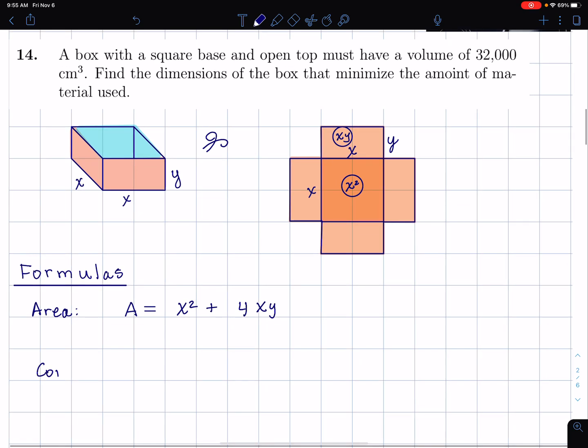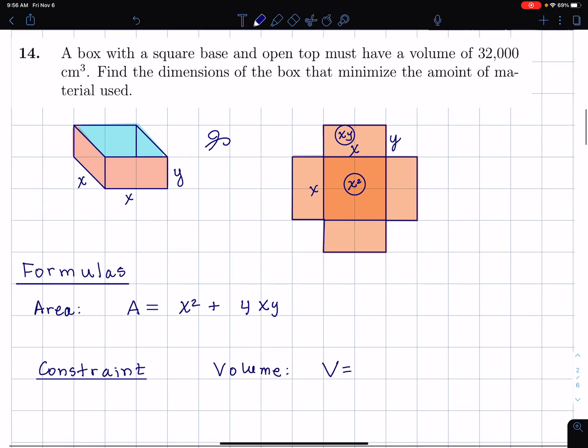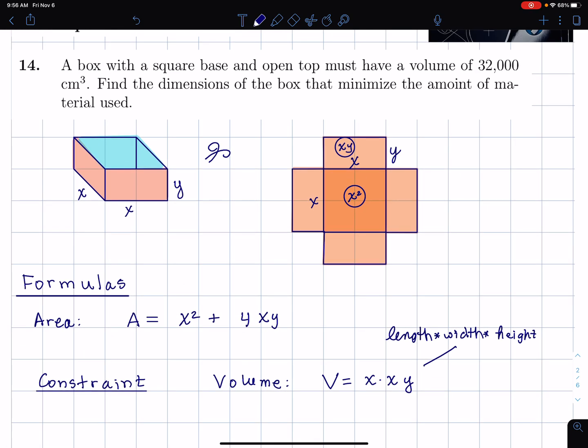The reason the problem says the amount of material used is they don't really want to say area because you could think there's an inside area and an outside area. So I just mean the area of that region there. That'll be the amount of material used. The volume is V equals, well, it's length times width times height.